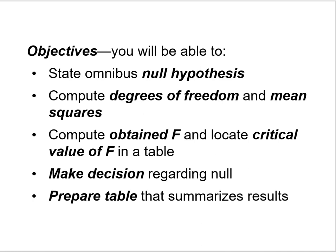Analysis of variance, one-way with one between subjects factor. The objectives for this module: by the end of it you'll be able to state the omnibus null hypothesis tested by the F statistic with one-way analysis of variance. You'll be able to compute degrees of freedom and mean squares, compute the obtained F statistic and locate the critical value of F in a table, make the right decision regarding rejecting or failing to reject the null hypothesis, and prepare a summary table of results.